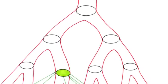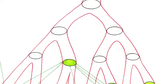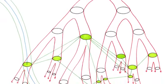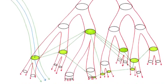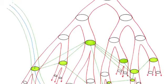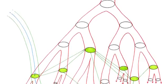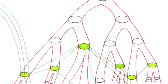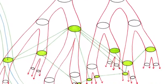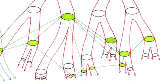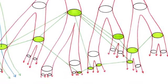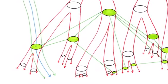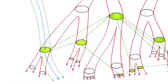How could movements of deterritorialization and processes of reterritorialization not be relative, always connected, caught up in one another? The orchid deterritorializes by forming an image, a tracing of a wasp, but the wasp reterritorializes on that image. The wasp is nevertheless deterritorialized, becoming a piece in the orchid's reproductive apparatus. Wasp and orchid, as heterogeneous elements, form a rhizome.